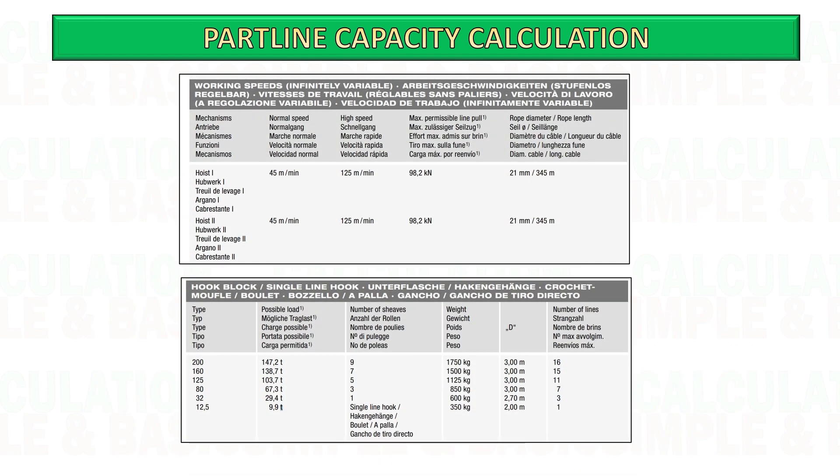This is the example data from the crane specification. We are using an 80-ton hook block and the weight is 0.850 ton. Based on this specification, the maximum permissible line pull is 98.82 kilonewton, which equals 10 ton.